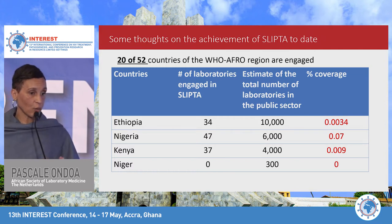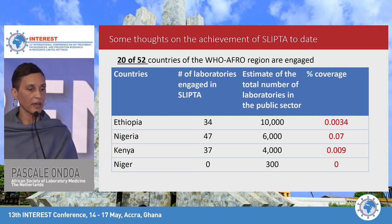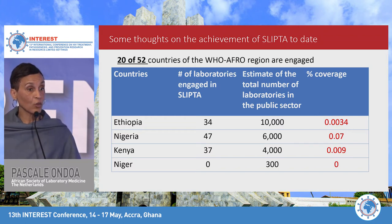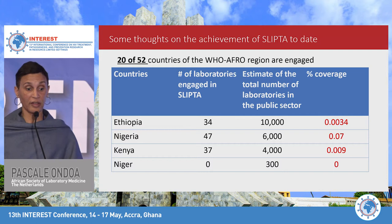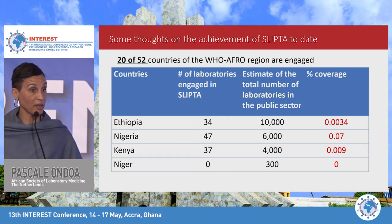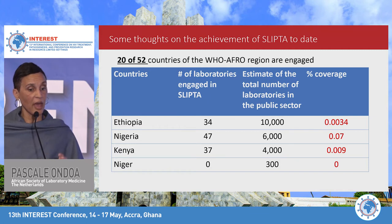I wanted to end without omitting SLIPTA achievements so far, because ASLM spearheads that effort on the continent. We have made a lot of progress, but so far only 20 of the 52 countries of the WHO AFRO region are engaged in SLIPTA and QMS. When you look at the most advanced countries — Ethiopia, Nigeria, and Kenya — you see the small proportion of laboratories actually implementing QMS as an official system.